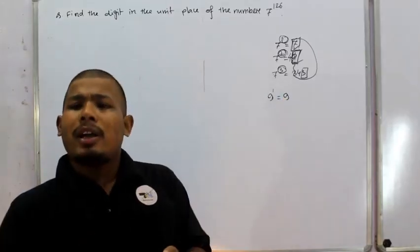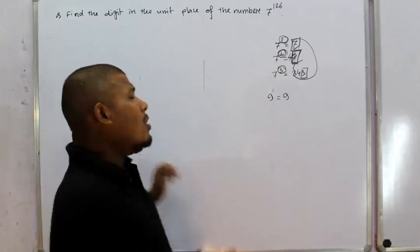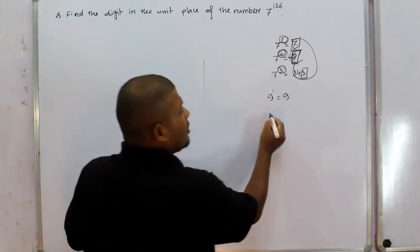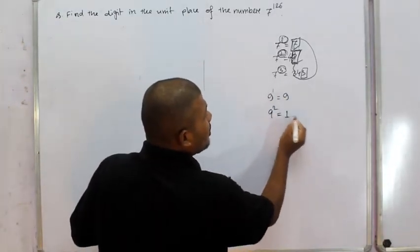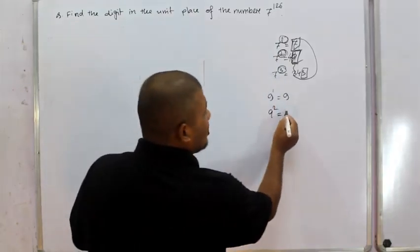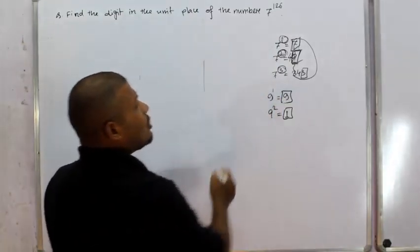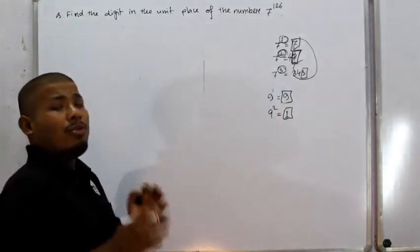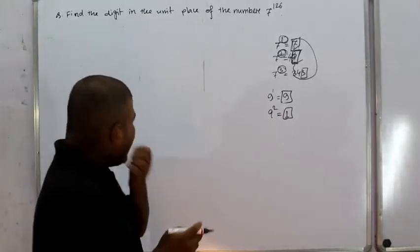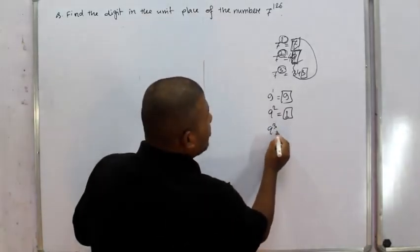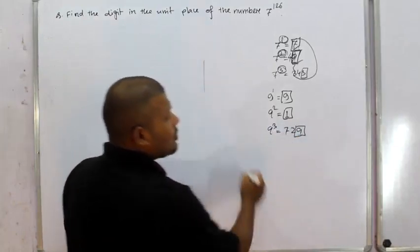If you want to raise 9 to an odd power, you get 9. If you want to raise 9 to an even power, you get a unit digit of 1. For example, 9 squared is 81, and 9 cubed gives unit digit 9.